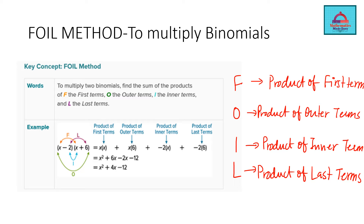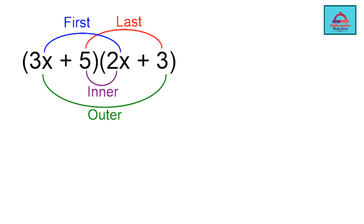This FOIL method is very useful. Let me show you examples of how to use this method to multiply binomials. As you see in the video, FOIL method is used to multiply two binomials, where each binomial has two terms. So pay attention.